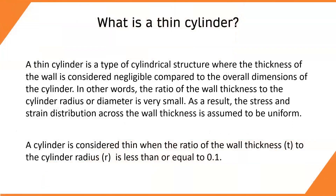A thin cylinder is a type of cylindrical structure where the thickness of the wall is considered negligible compared to the overall dimensions of the cylinder. The ratio of the wall thickness to the cylinder radius is very small. As a result, the stress and strain distribution across the wall thickness is assumed to be uniform.